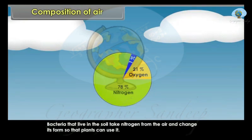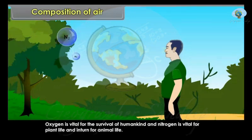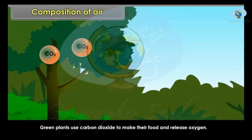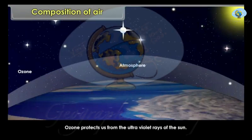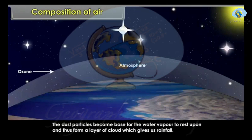Bacteria that live in the soil take nitrogen from the air and change its form so that plants can use it. Oxygen is vital for the survival of humankind and nitrogen is vital for plant life and in turn for animal life. Green plants use carbon dioxide to make their food and release oxygen. Ozone protects us from the ultraviolet rays of the sun. Dust particles become a base for water vapour to rest upon, forming clouds which give us rainfall.